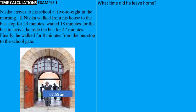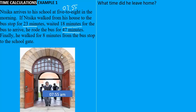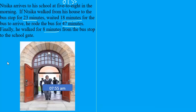Here we've got a time calculation example. When Zika arrives at his school at five to eight — just remember five to eight we would write as 07:55. Don't forget to write the zero before the hour, so seven fifty-five would be 07:55. Zika walked from his house for 23 minutes, waited 18 minutes for the bus, rode the bus for 47 minutes, then walked 8 minutes from the bus stop to his school gate, arriving at school at seven fifty-five.